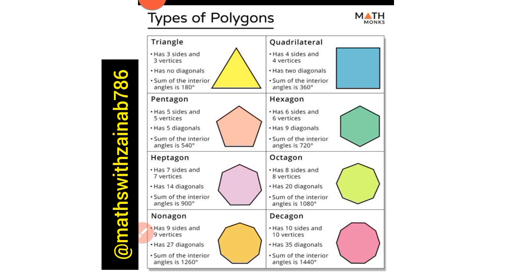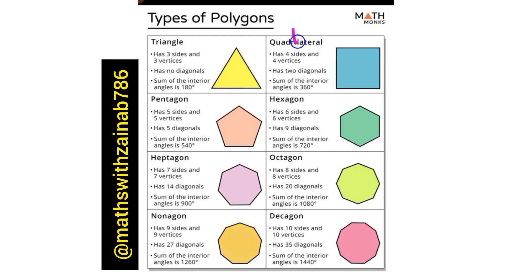Types of polygons. The first one is a triangle, which has three sides and three vertices. It has no diagonals. The sum of the interior angles is 180 degrees.